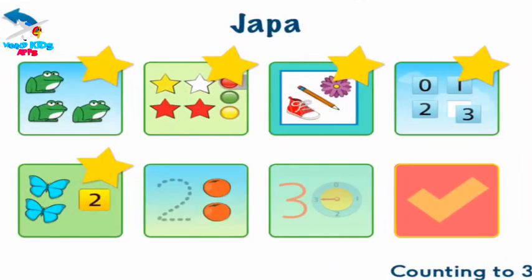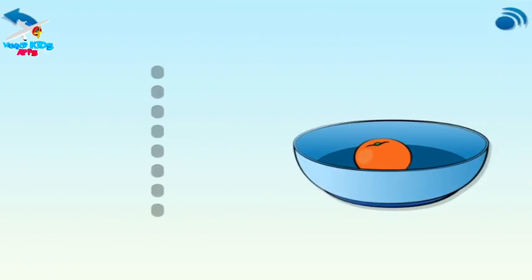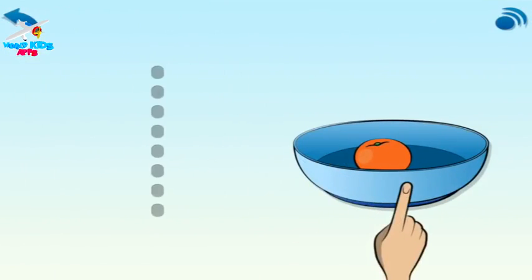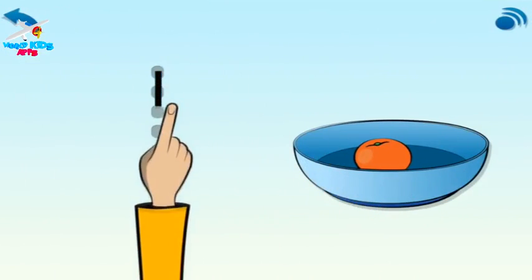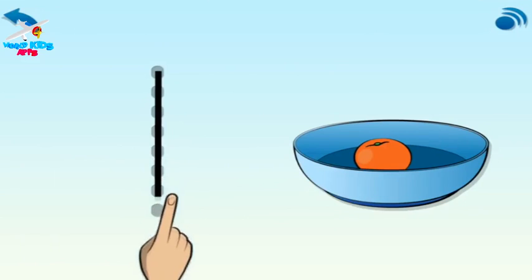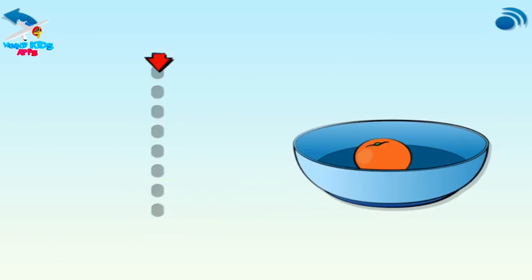Choose the flashing button. Look! One orange in the bowl. One. Your turn. Trace one.